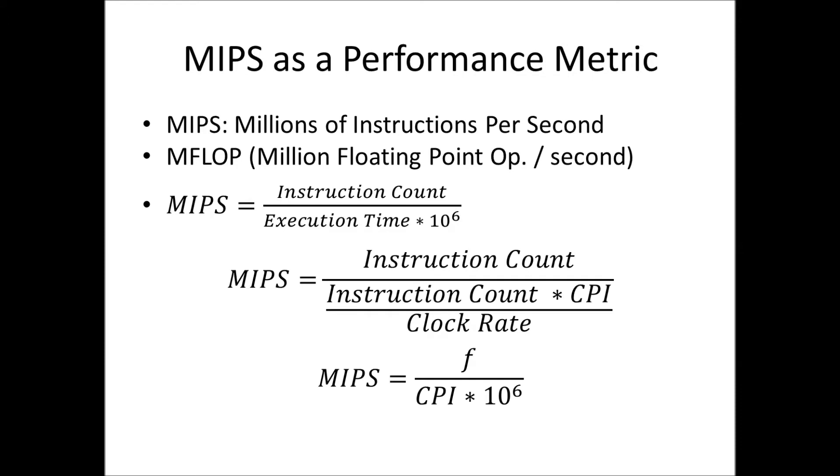We saw this slide very quickly in class, and I didn't really get a chance to go over it a lot, but I want to do that now. So basically, there are two important versions of this equation. MIPS equals the instruction count divided by the execution time times 10 to the 6th.